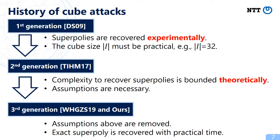This is the history of cube attack. The first generation was proposed by Dinur and Shamir, and this method used superpoly recovery by an experimental approach — we first create a cube at random, compute the sum by experiment, and check. If we use this technique, the cube size |I| must be practical; for example, the size |I| is up to 32. The second generation was proposed at Crypto 2017, where the complexity to recover the superpoly is bounded theoretically.